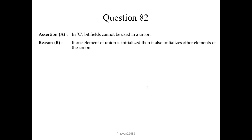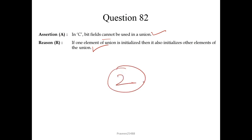Question 82. In C, bit fields cannot be used in a union — this is a correct statement. If one element of a union is initialized, then it also initializes other elements of the union — this is also correct. But this reason is not the explanation of the assertion. So we choose option 2.